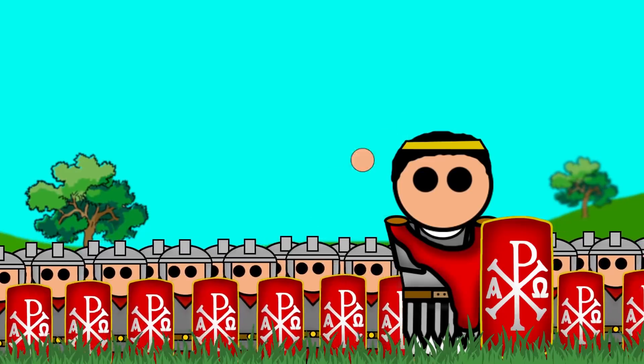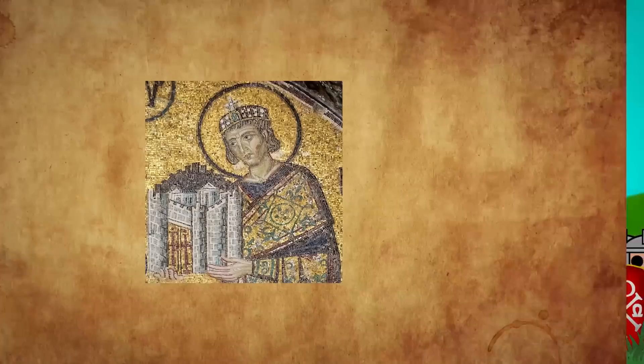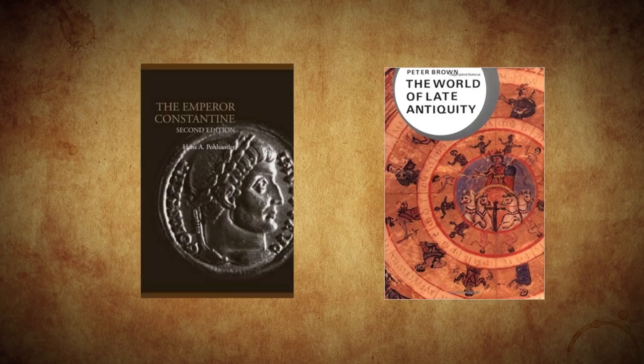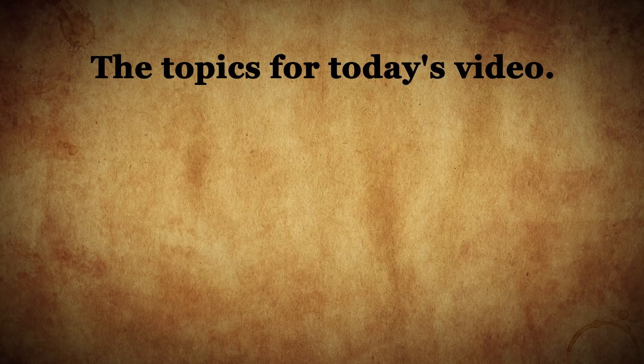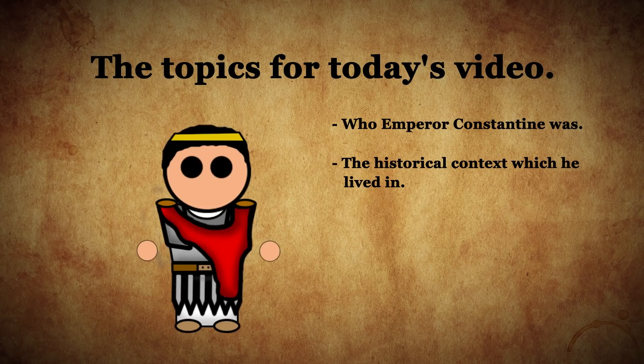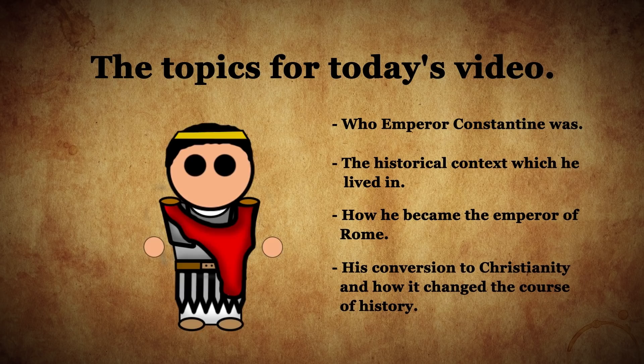In this video we're going to cover the history of Emperor Constantine the Great, also known as the first Christian emperor of Rome. The scholarly literature we will be using can be found in the description below. I'm Quillowink History and the topics for today's video will be who Emperor Constantine was, the historical context which he lived in, how he managed to become the sole ruler of the Roman Empire, his conversion to Christianity and how it significantly affected the future of the Empire, as well as the history of Europe itself.